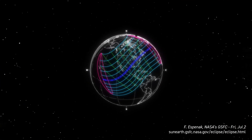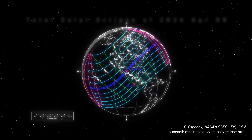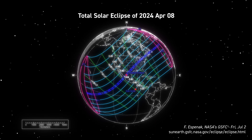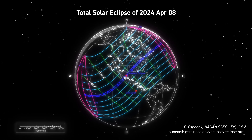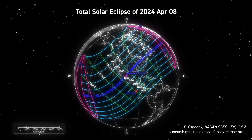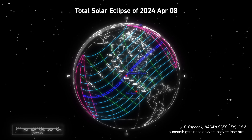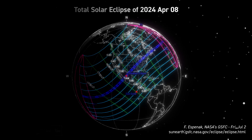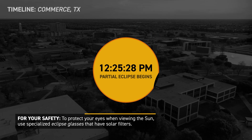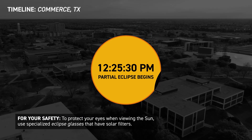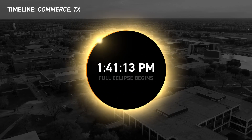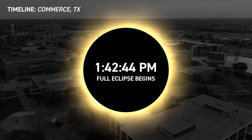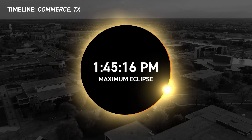This NASA diagram for the April 2024 eclipse shows the path of the moon's shadow as it will move across the surface of the earth. The eclipse starts out in the Pacific Ocean, will cross over North America, and will end in the Atlantic Ocean. To see the total solar eclipse, you must be in the blue path with the circles. For Commerce, Texas, the eclipse will begin at 12:26 p.m. on Monday the 8th of April. The exciting part is totality, which begins at 1:42:43 p.m. and will end 4 minutes and 13 seconds later — that is the part you don't want to miss.